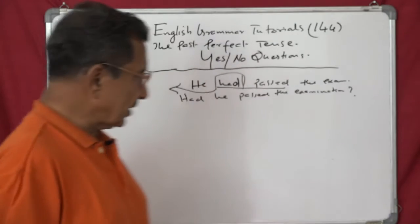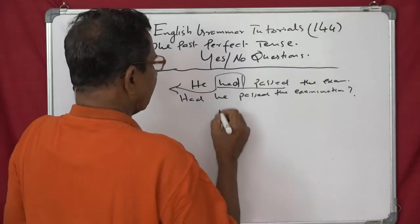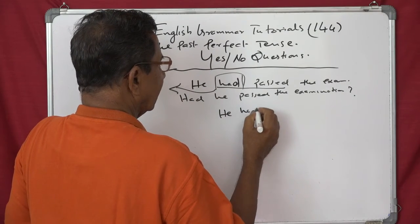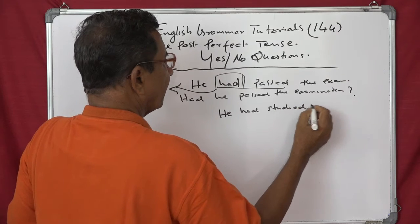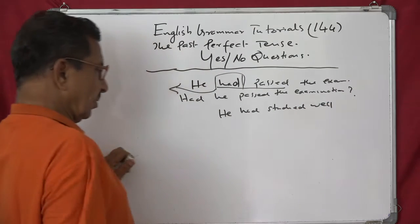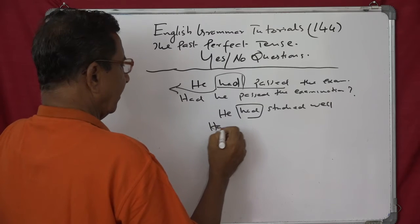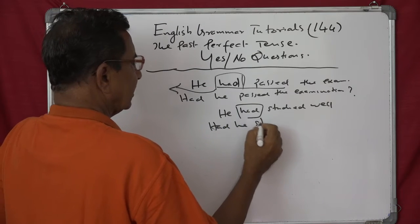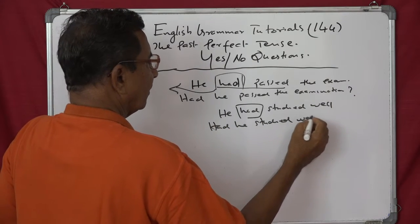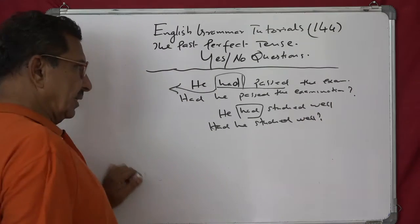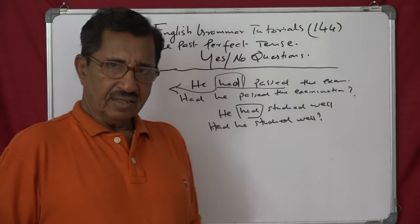Try a few more sentences. He had studied well. He had studied well. Yes or no question: Had he, had he studied well. Yes or no. Had he studied well. Alright.